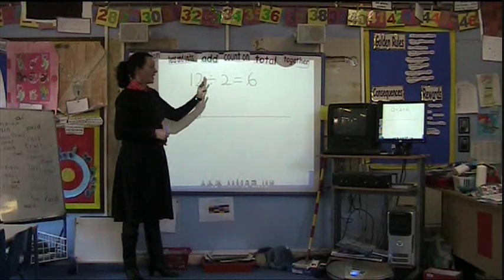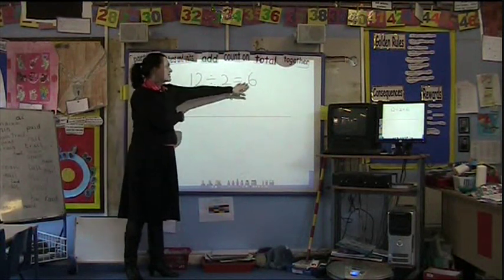So the children can count in twos up to 12: 2, 4, 6, 8, 10, 12, and get the answer of 6.